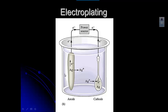So if your mom or your grandmother has a silver-plated tray or a silver-plated hairbrush, it's something underneath like stainless steel with a really thin layer of silver on top. So it looks like it's all silver, but it's actually a really thin layer. And that comes from this process of electroplating.